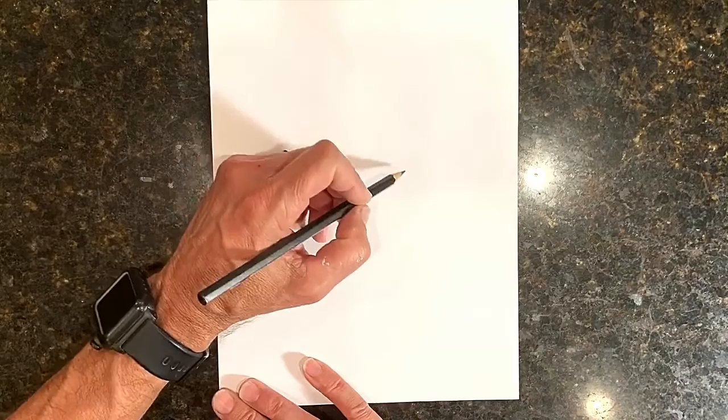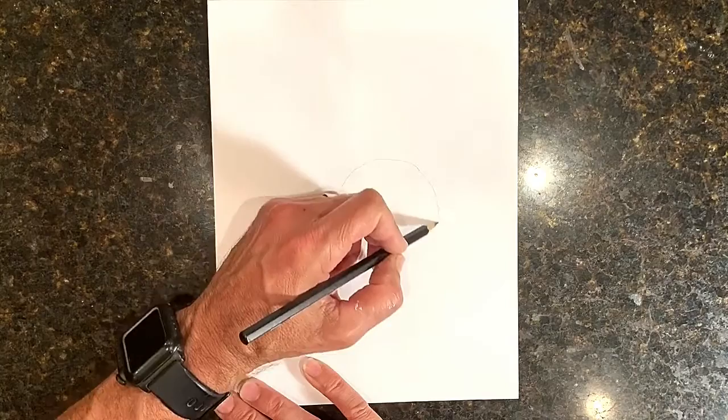To draw our box turtle, we're going to start with a circle, and that's going to be the shell. The shells look like helmets.